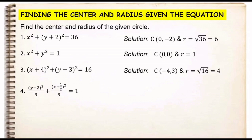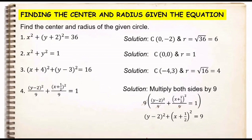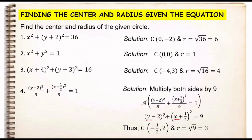For number 4, we first need to eliminate the 9 in the denominator by multiplying both sides by 9, so 9 cancels out. We copy the numerators: (y − 2)² + (x + 1/2)² = 9 × 1 = 9. From this we identify the center and radius. The center is at (−1/2, 2) — remember, h comes from the x variable first, then k from the y variable. The radius is the square root of 9, which equals 3.